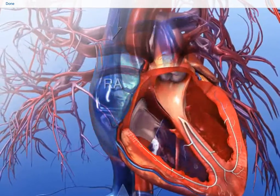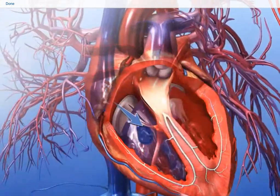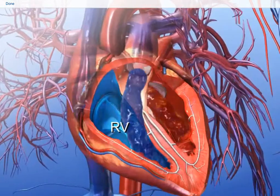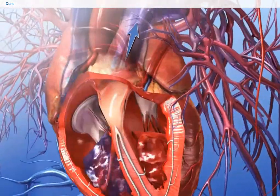The right atrium receives oxygen-depleted blood and empties it into the right ventricle. This blood then flows to the lungs for gas exchange.